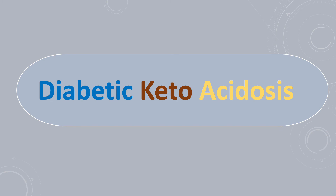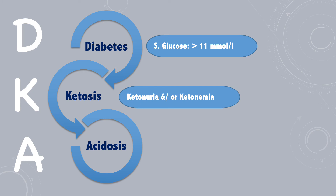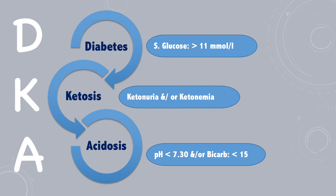What is DKA? The name diabetic ketoacidosis tells us all the features of this disease. It happens in diabetic children who are known to have diabetes or this is their first presentation. Hyperglycemia is the first finding, with a high glucose level of at least 11 millimole per liter. The other feature is ketosis that you may detect in the urine as ketonuria, or in the blood as ketonemia. The third feature is metabolic acidosis. For diagnosis, you need pH to be less than 7.30 and/or bicarb less than 15.